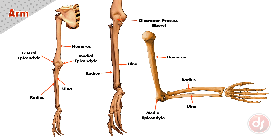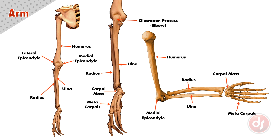The hand connects to the radius at the carpal mass, which is a series of small bones that make up our wrist. The word 'meta' means beyond in Latin, and so the metacarpals are beyond the carpal mass and make up the body of the hand. The phalanges are the digits of our fingers. There are three phalanges for each finger and two for the thumb.